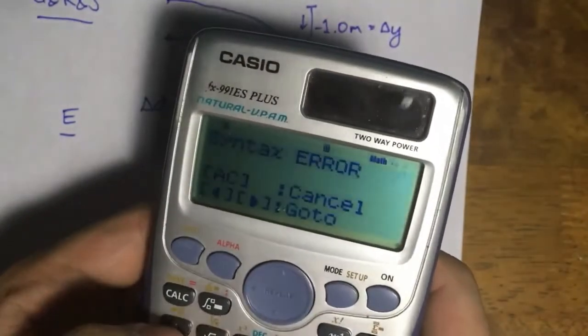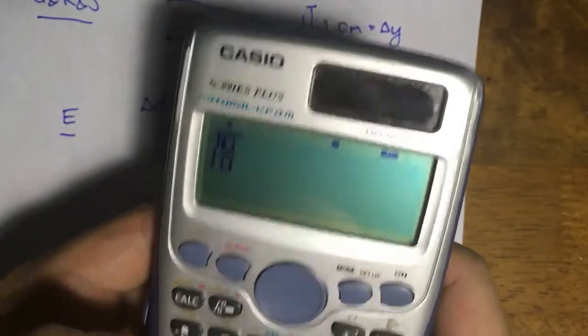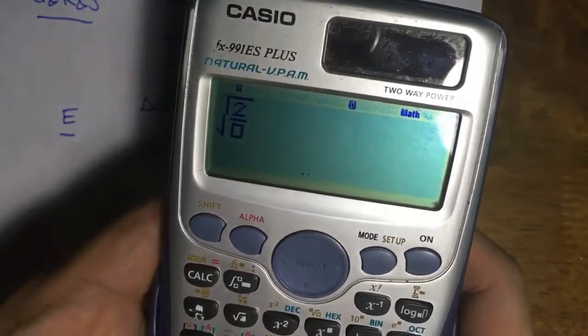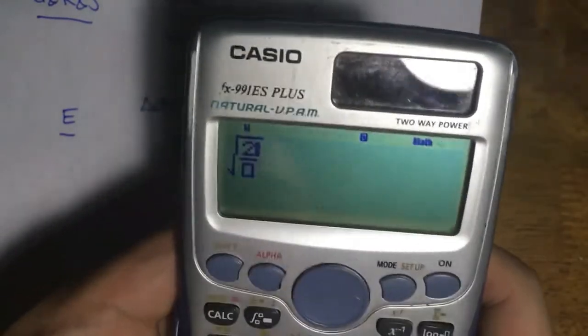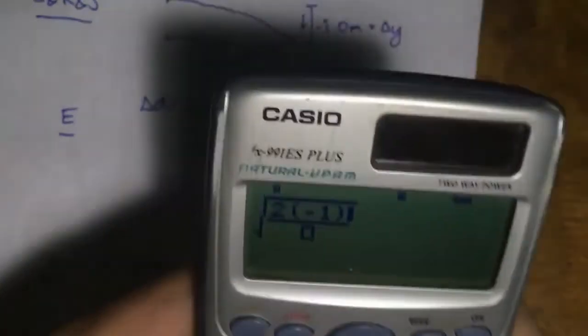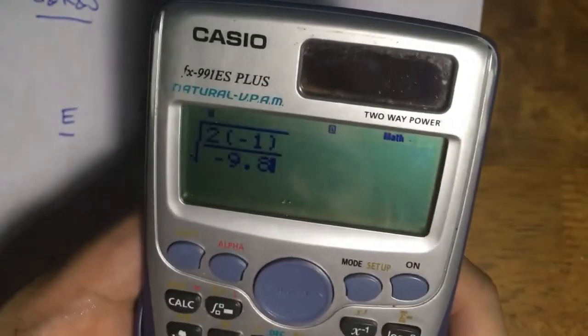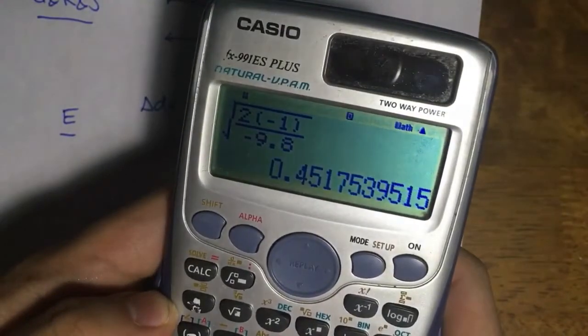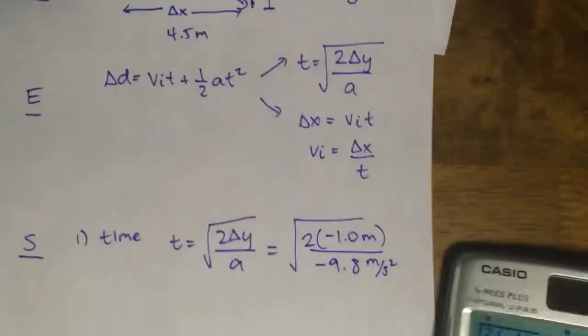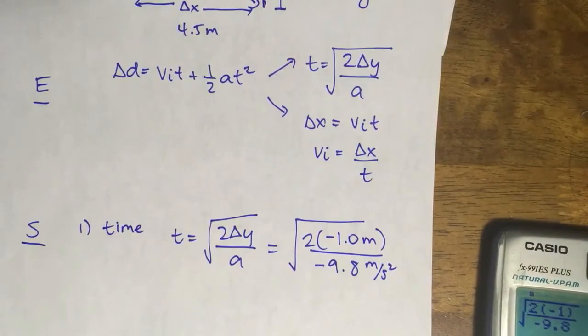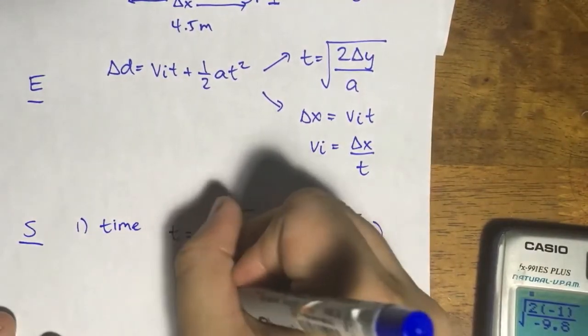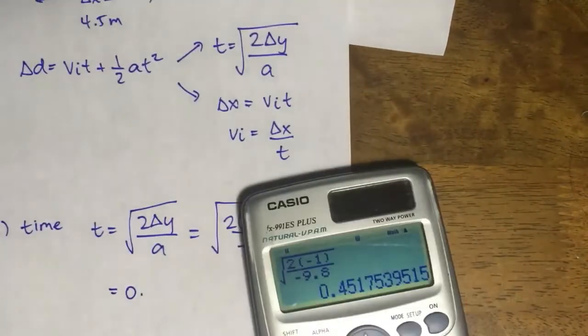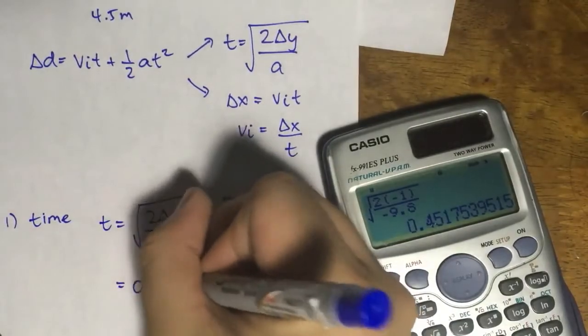So that's 2 times negative 1 all over negative 9.8 gives me 0.45 seconds. So the time is 0.45 seconds.